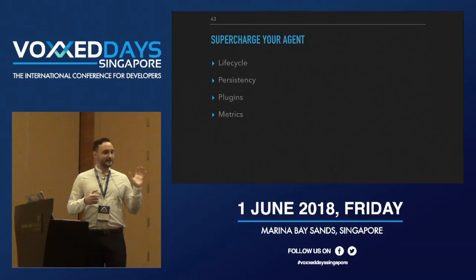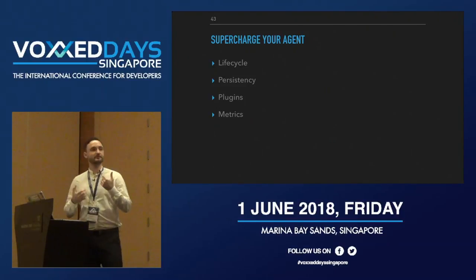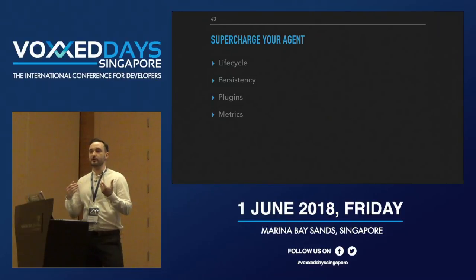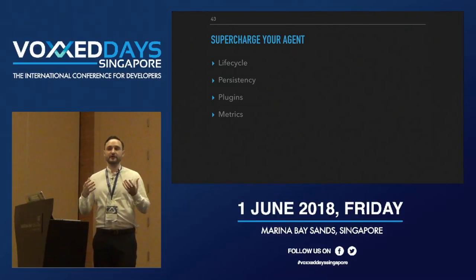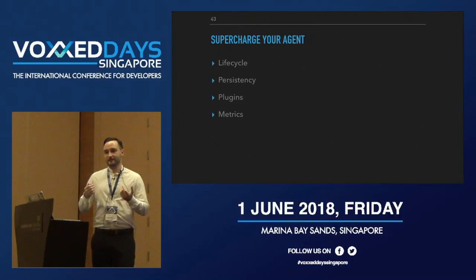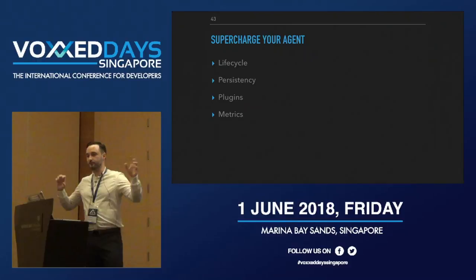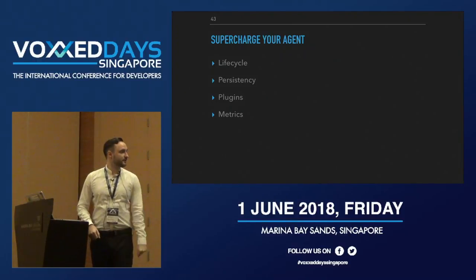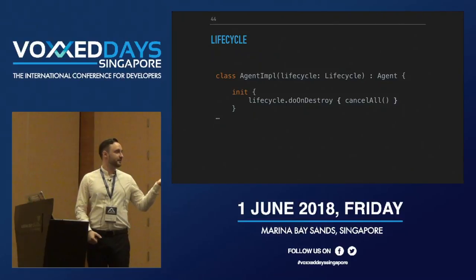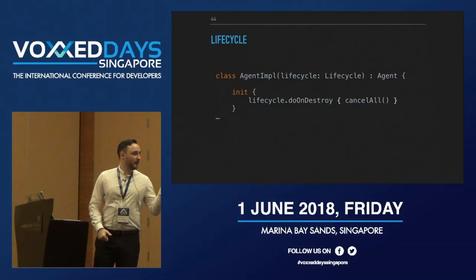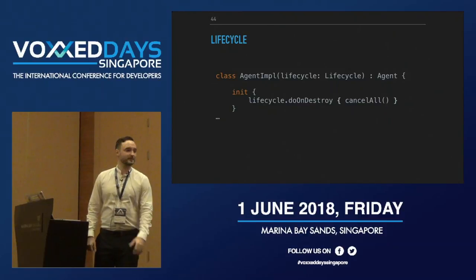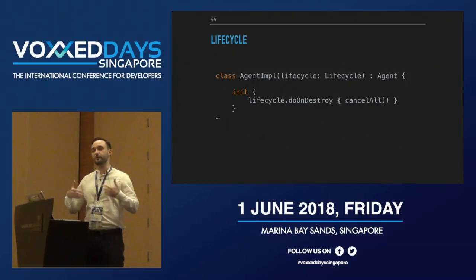In one project I worked on, persistency was a big problem — we had a lot of offline capabilities, and when going online we needed to synchronize offline data with servers. Things got worse when the user could restart the app at any stage we couldn't control. This solution could be easily applied to handle that. Also, plugins: once you have a single place to launch all jobs, you can add additional logic — like advanced logging to know how many jobs are currently running — which was previously impossible since jobs were launched from many different places.